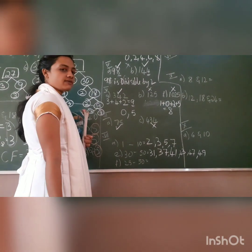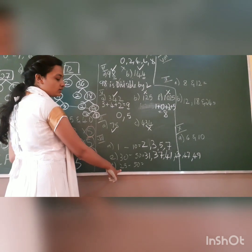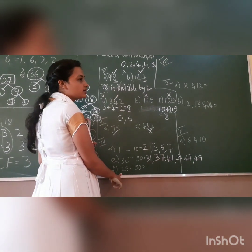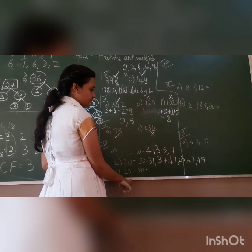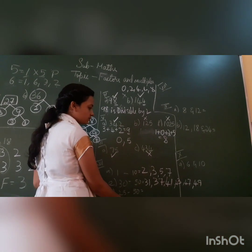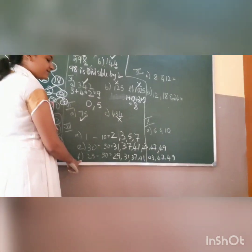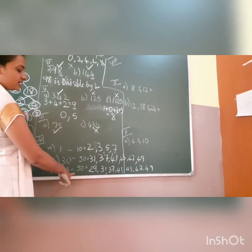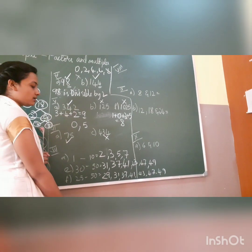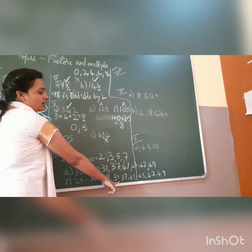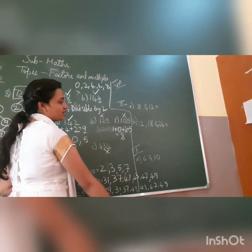Now for 25 to 50: 25 can be divided by 5, so it is not prime. For 29, it is a prime number. 31, 37, 41, 43, 47 — the rest you can find from the previous part.